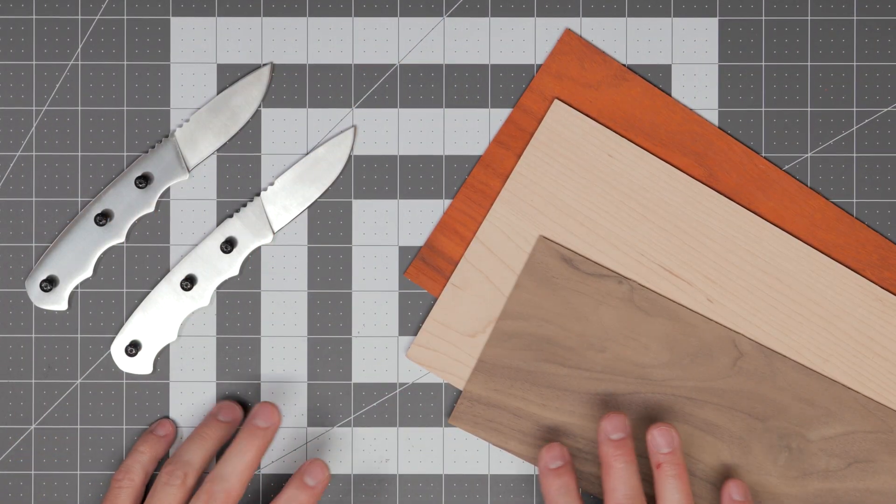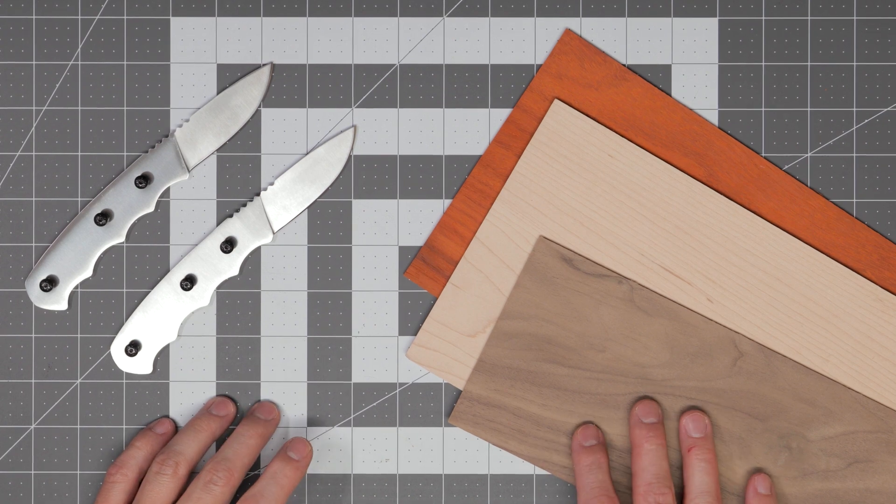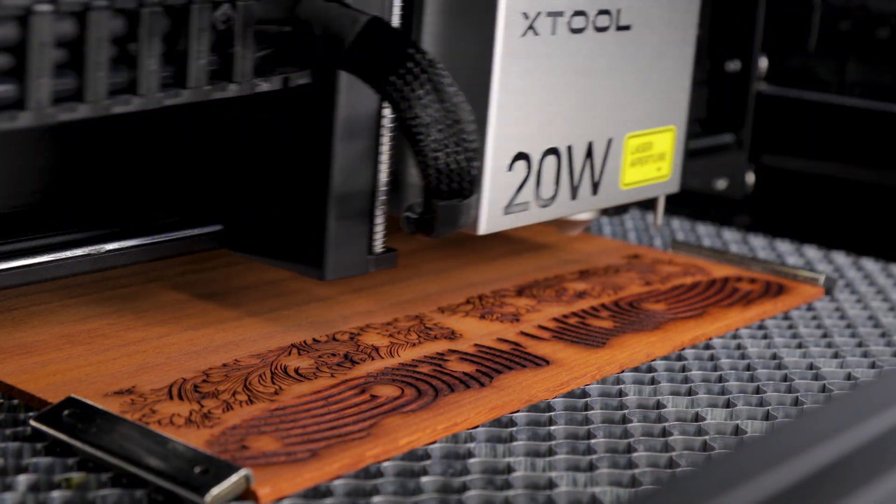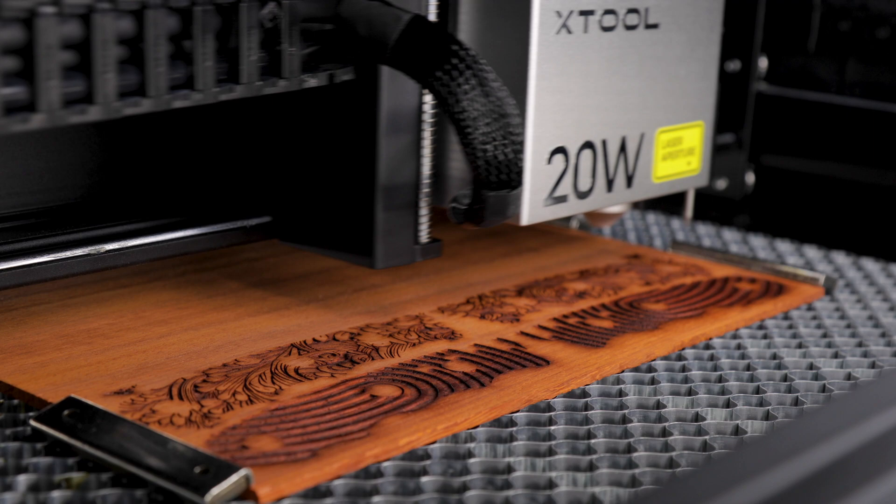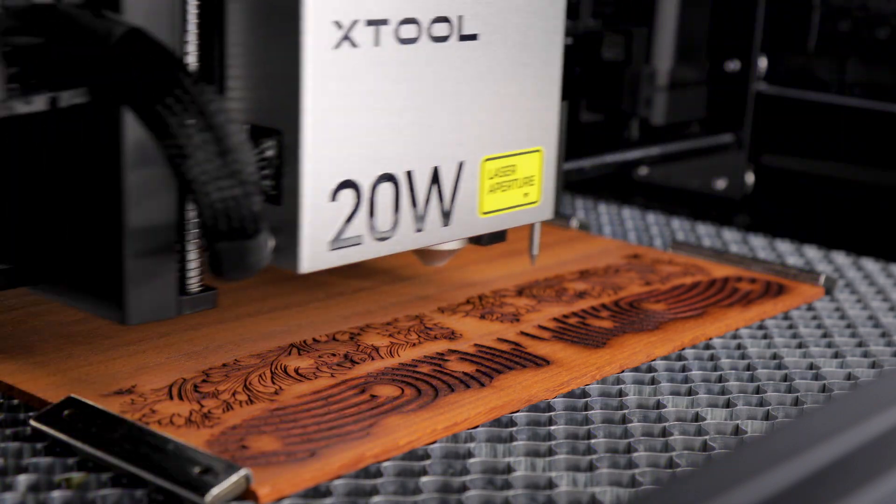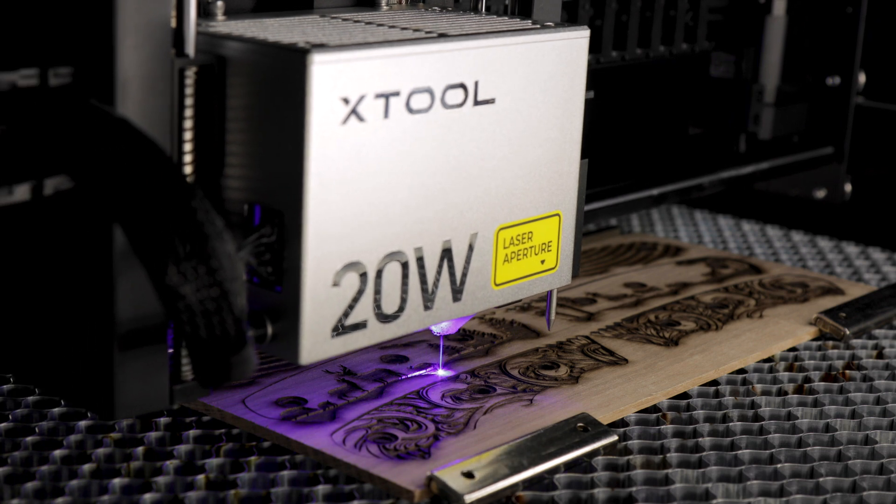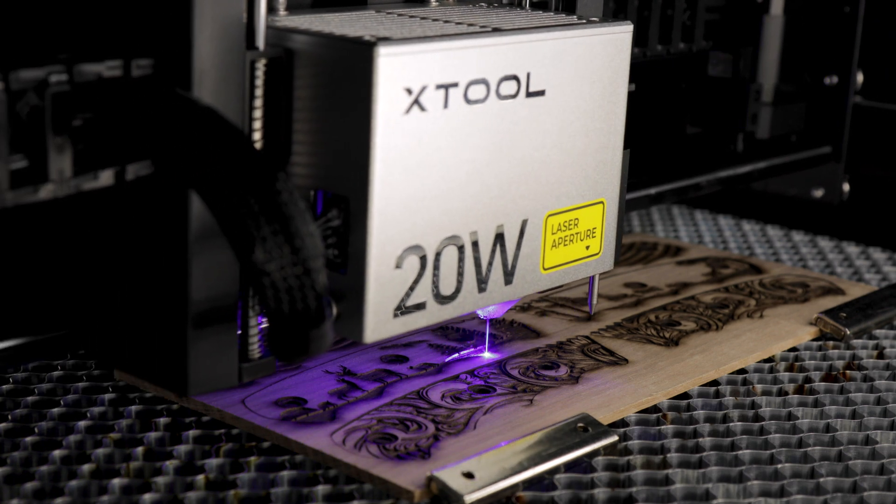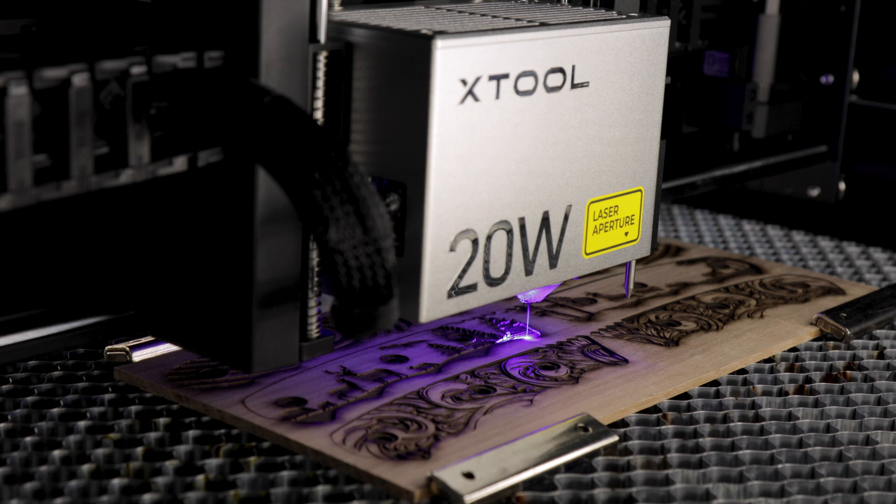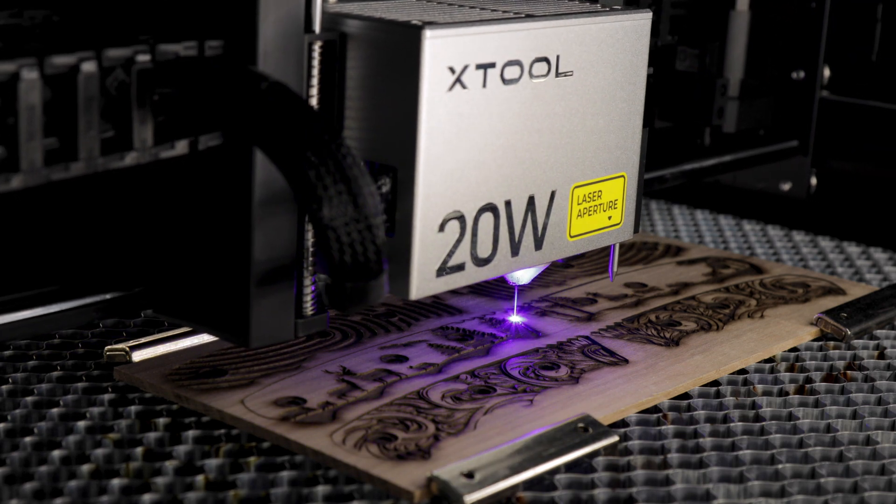The first and most obvious thing you'll need for this project is a laser cutter. Diode lasers like the 20 watt Xtool S1 are a great choice for a project like this because of the dark engravings they can give you. If you're interested in finding out more about the S1, make sure to check out the link in the description below.